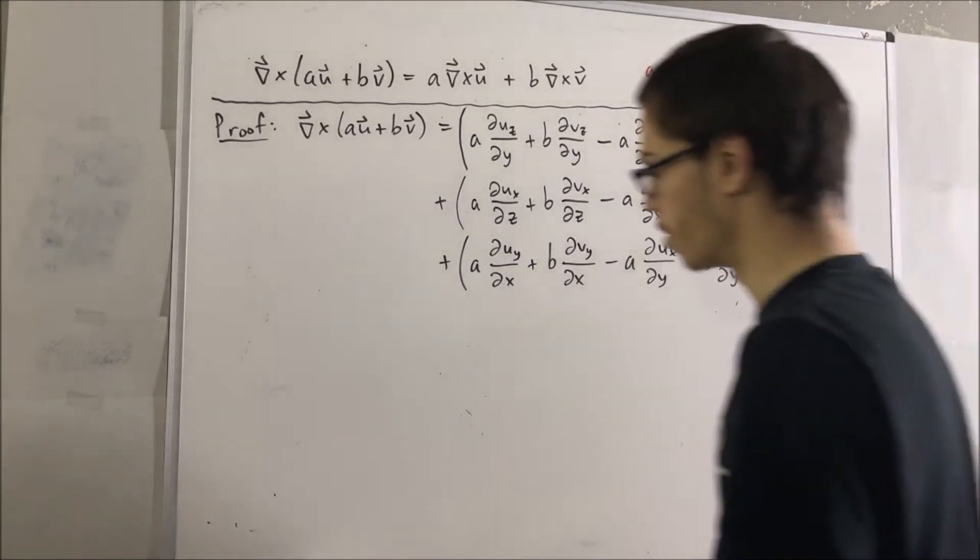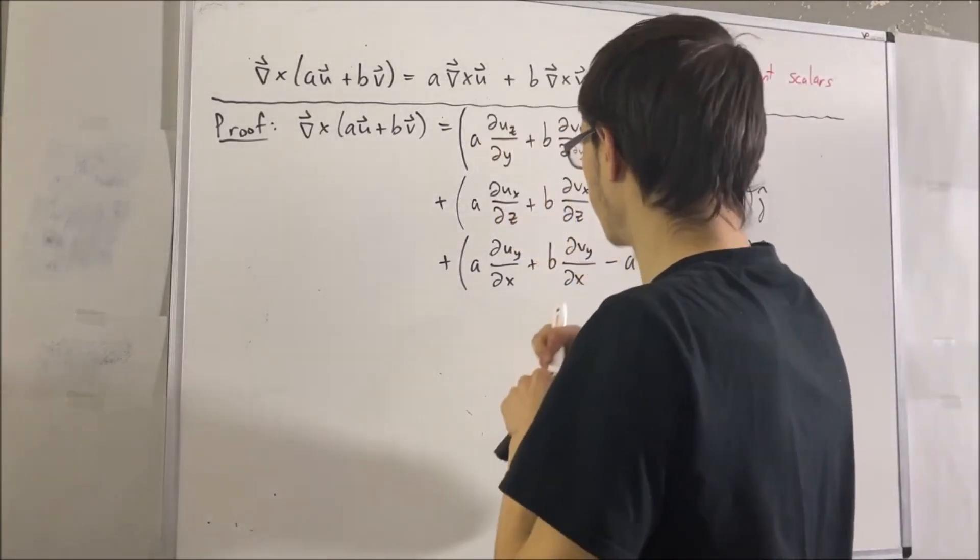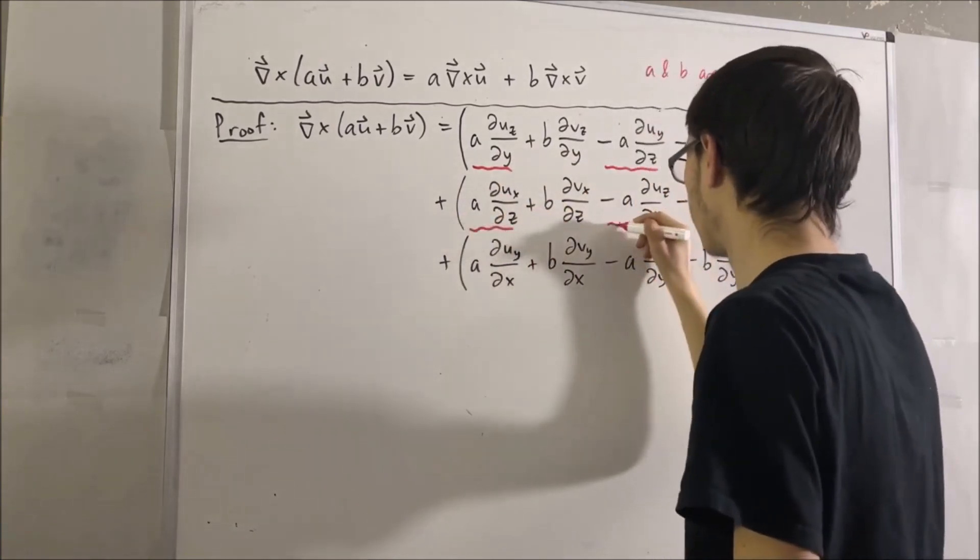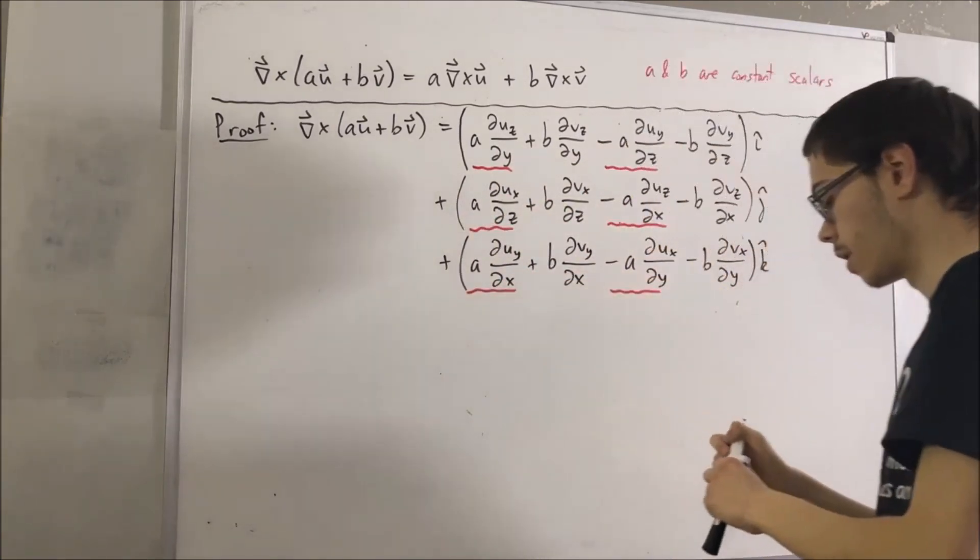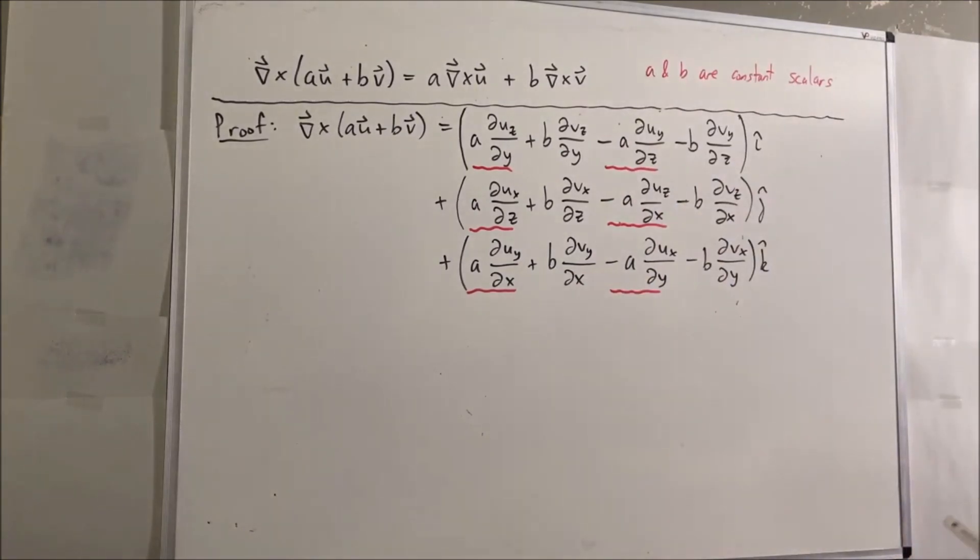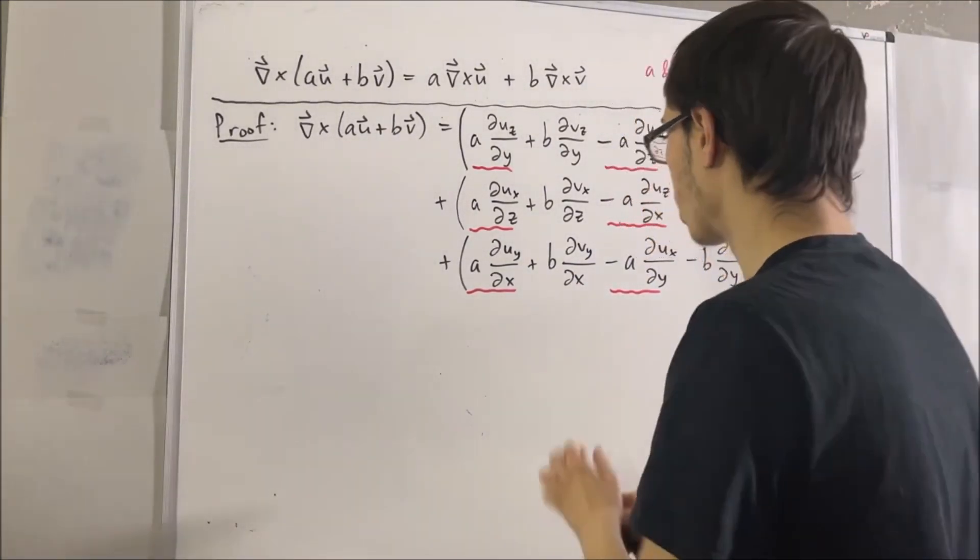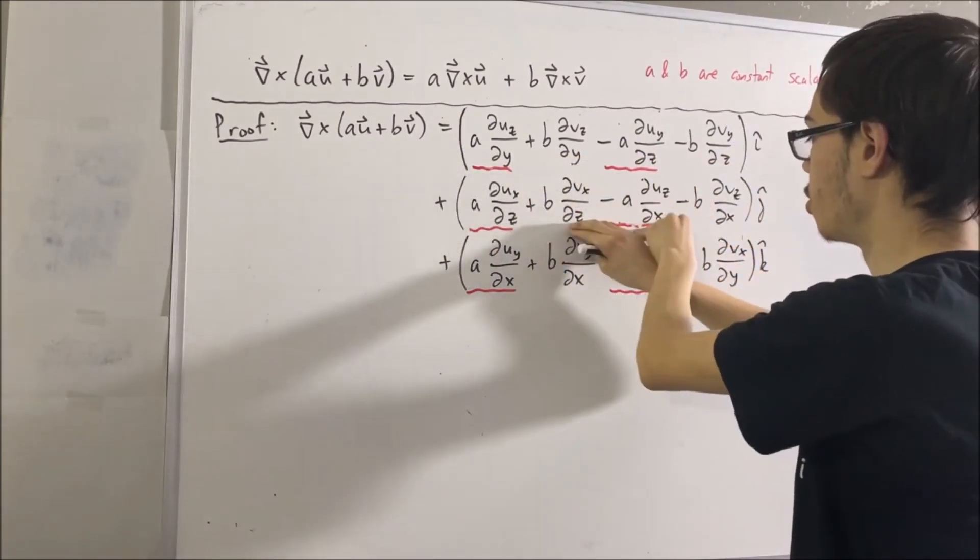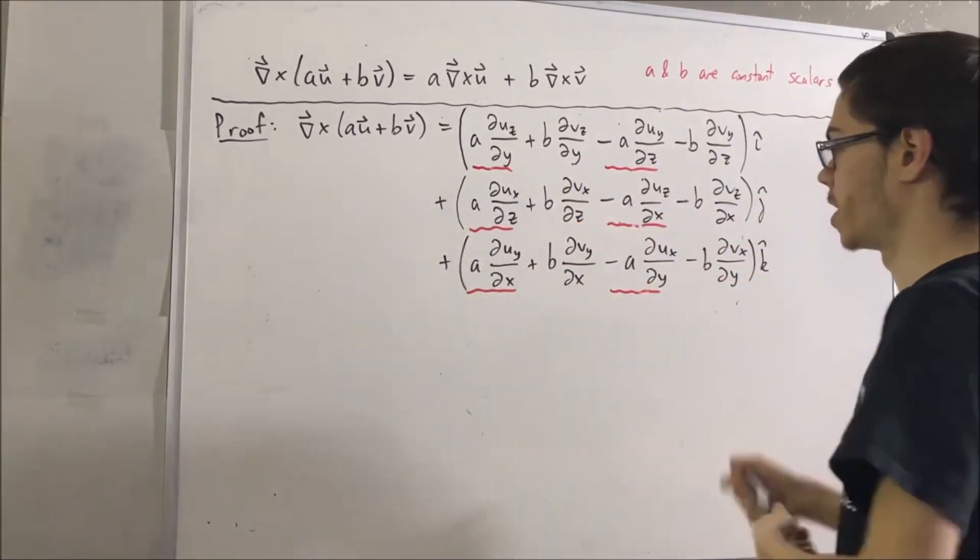So, now what I want you to notice is that we have these terms with a in it, and the non-underlined terms with b in it. To group the terms with a and b together, I'm going to swap these two middle terms for each of them.